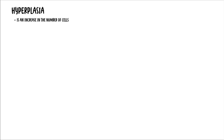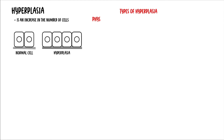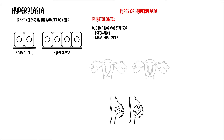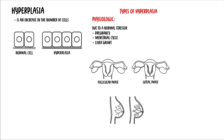Hyperplasia is an increase in the number of cells. Physiologic hyperplasia occurs due to normal stresses. For example, an increase in the size of breasts during pregnancy, an increase in the thickness of the endometrium during the menstrual cycle, and liver growth after partial resection.